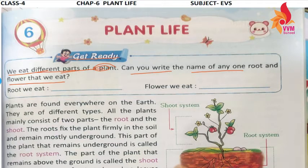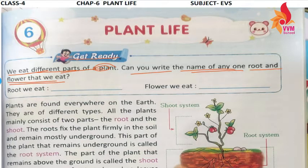We eat different parts of the plant. We consume different parts as food. Can you write the name of any one root and flower that we eat? Can you tell one kind of flower or one root that you use for eating? This means that you eat different parts of the plant.